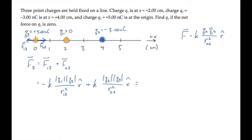We can factor out the common terms of k and the magnitude of q3. This whole expression equals zero, which means that the term in parentheses must equal zero.